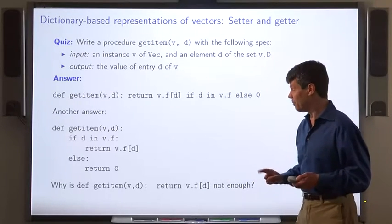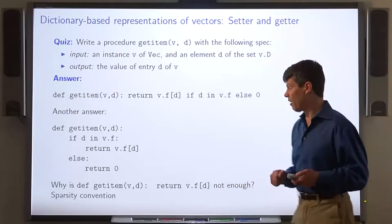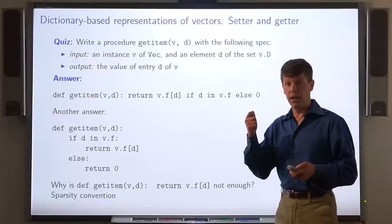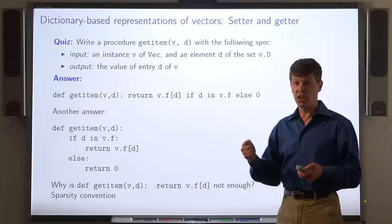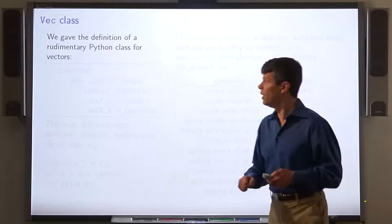Well, this isn't sufficient because D might not be a key of V dot F because of our sparsity convention. If the D entry of the vector V is 0, then D need not be a key of the dictionary.